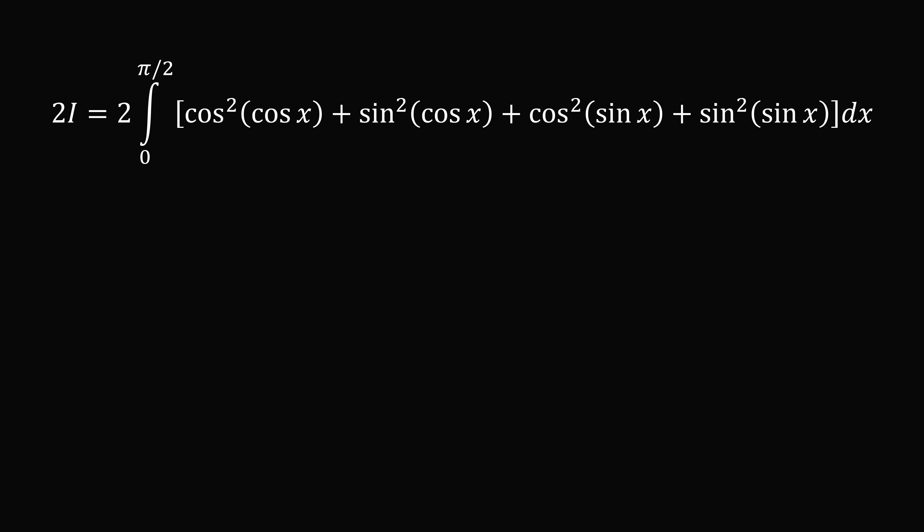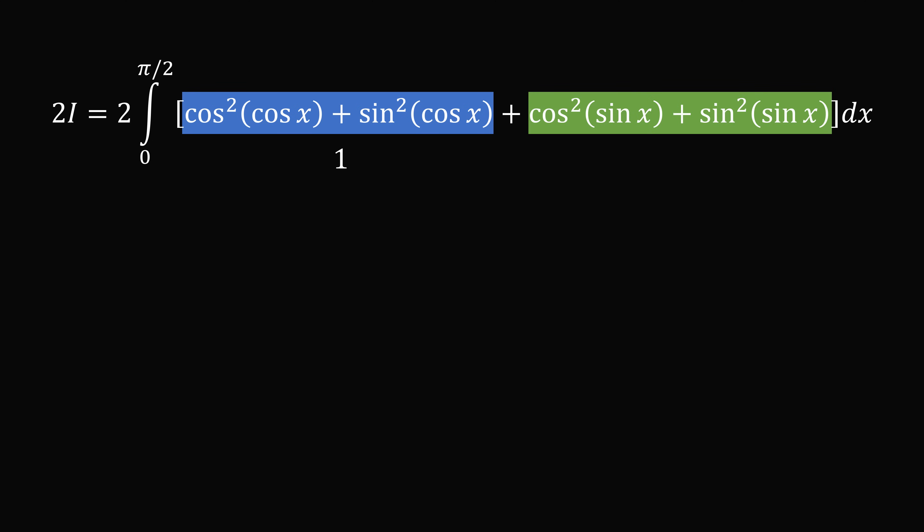We can now make a simplification. Cosine squared of something plus sine squared of the same argument will be equal to one. Then we have cosine squared of something plus sine squared of the same something. So this will also be equal to one.